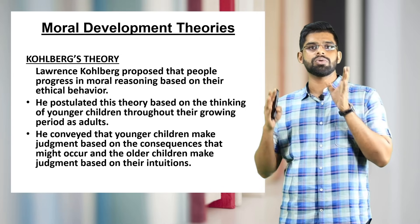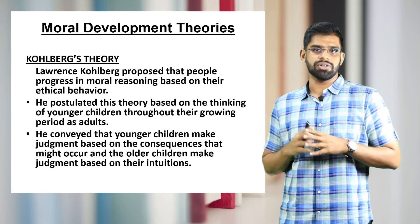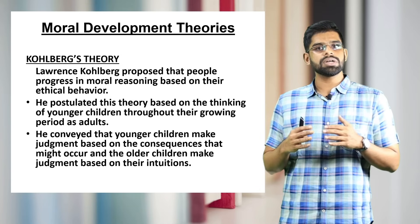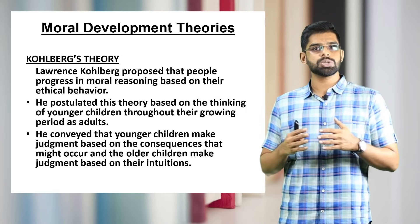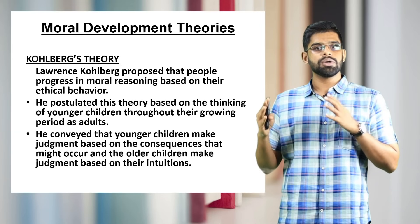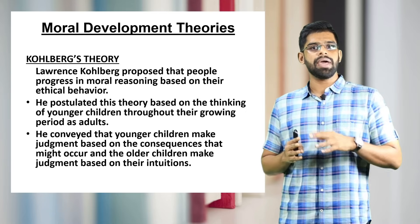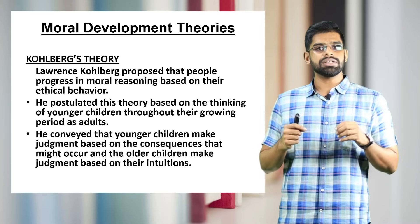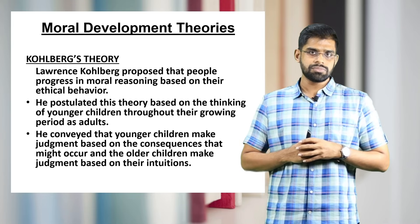The first theory that comes into the picture is Lawrence Kohlberg's theory. Lawrence Kohlberg proposed that people progress in moral reasoning based on their ethical behavior. He postulated this theory based on the thinking of younger children throughout their growing period as adults. He conveyed that younger children make judgments based on the consequences that might occur, and older children's judgments are based on their intuitions.